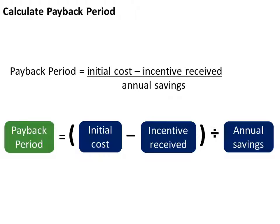The formula for calculating the payback for an energy efficiency project is initial cost minus incentive received divided by annual savings. This formula is on the formulas to calculate payback guide located on the webpage where you access this course. This guide also contains all of the formulas we'll go over today.